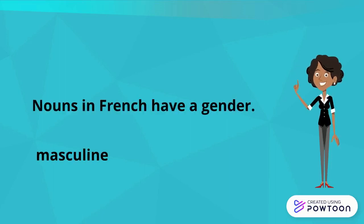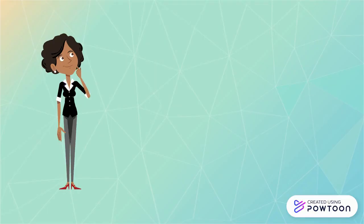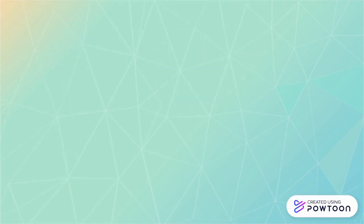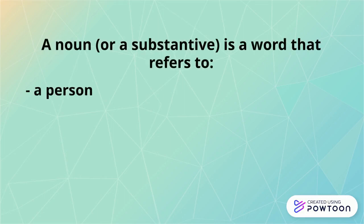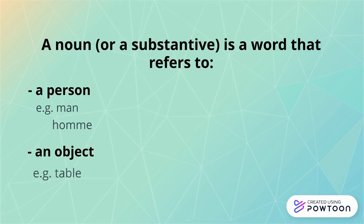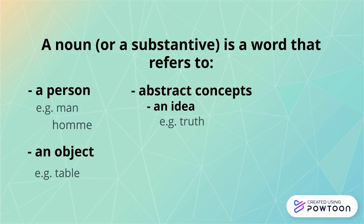They are either masculine or feminine. The first question is: what is a noun? A noun or a substantive is a word that refers to a person — for instance, 'man' in English, 'homme' in French — or an object, like 'table' in English and 'table' in French, or abstract concepts such as an idea or truth, 'vérité' in French.